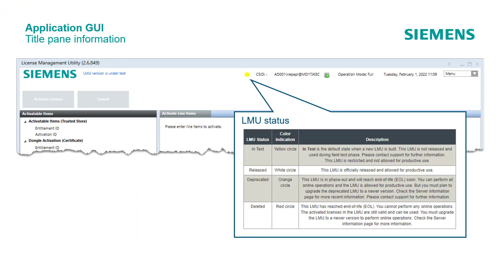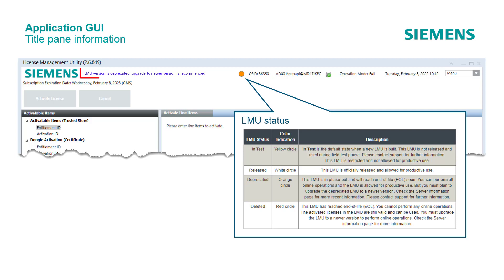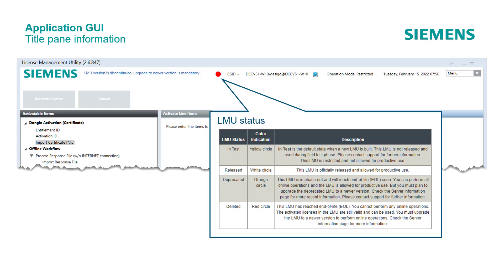In cases where the color of the circle changes, it is possible that additionally a note appears next to the Siemens logo. This example shows the note for the yellow circle. With the orange circle status, this note will appear. Or with the red circle status, this note will appear.